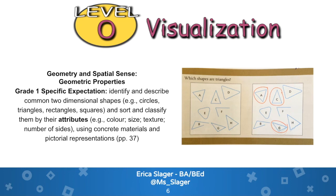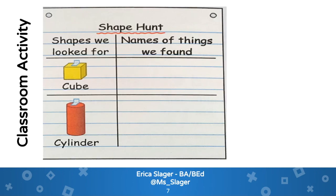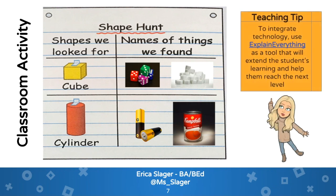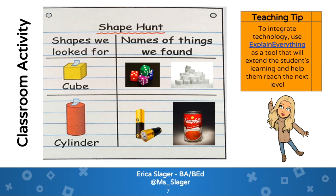An example from Marian Small's book is asking students which shapes are triangles. We can see that the three triangles circled in red are the ones students were able to identify based on their attributes. A classroom activity to support students at this level could be a shape hunt, where students look at a cube and a cylinder, then go around the classroom and find objects with similar properties. For example, dice or sugar cubes for the cube, and batteries or a can of soup for the cylinder. You can use the Explain Everything app to extend students' learning and help them reach the next level.